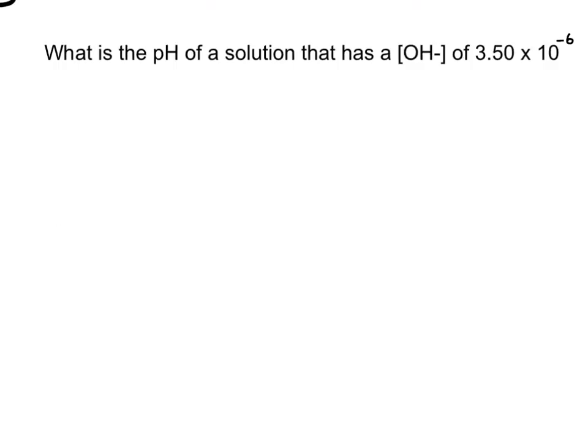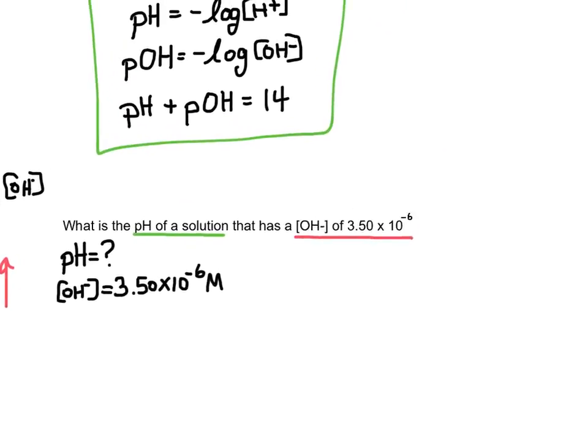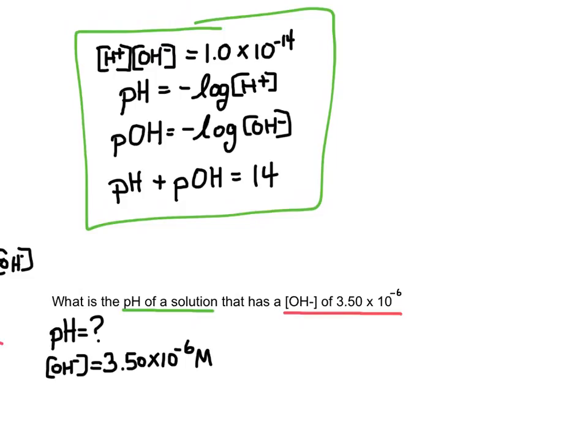So let's look at an example and see how this would work. This question says, What is the pH of a solution that has a hydroxide concentration of 3.5 times 10 to the negative 6? Let's look back at the equations we have and see which one we're going to use. We're actually going to need to use two of them in this problem. We're given the hydroxide ion concentration, but we want to find the pH. You can see that pH takes the negative log of the hydrogen ion concentration. So we can't directly use this equation. I'm going to start with pH plus pOH equals 14. Now I don't know the pOH, but I do know the hydroxide ion concentration. So I could use the pOH equation to solve for pOH and then use this equation to solve for pH.